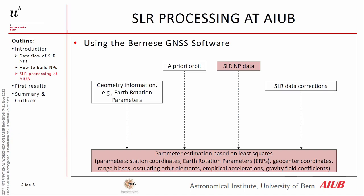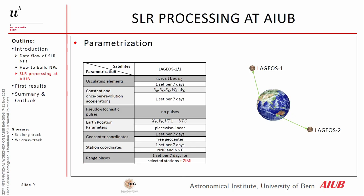Now, to the SLR processing. We need geometric information like earth rotation parameters and station coordinates, an a priori orbit, and corrections like range biases. We need the normal point data. All this information is used for processing, where we do a parameter estimation based on least squares. We can estimate station coordinates, earth rotation parameters, and so on. The idea is to build the normal points in different ways and see how it affects our SLR processing and how the estimated parameters change.